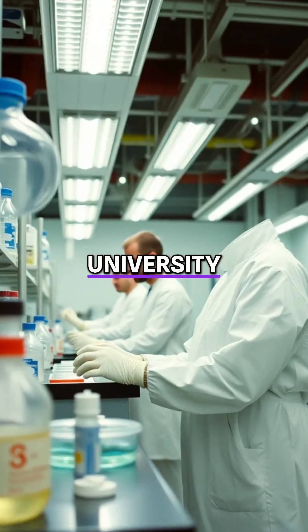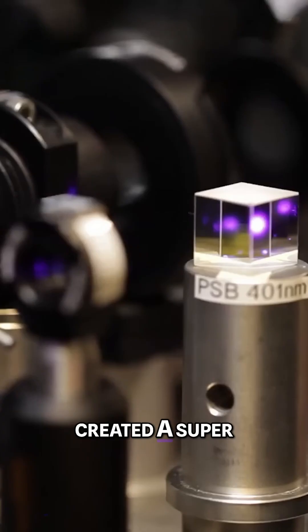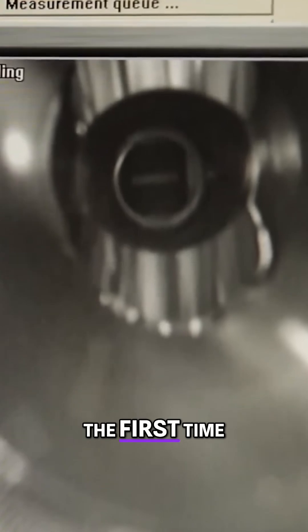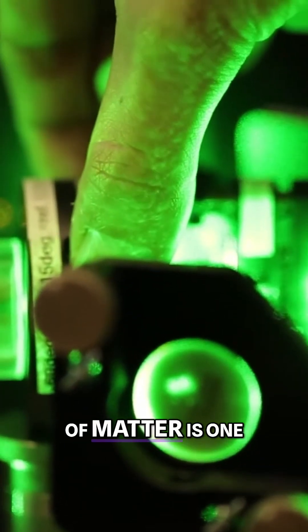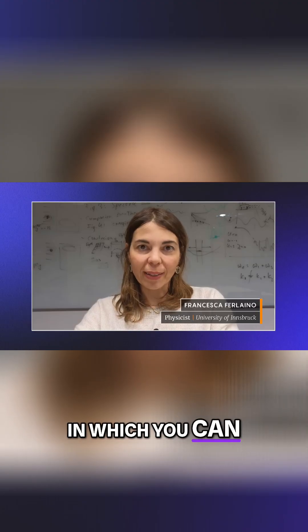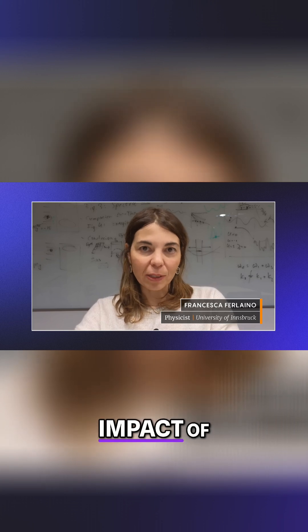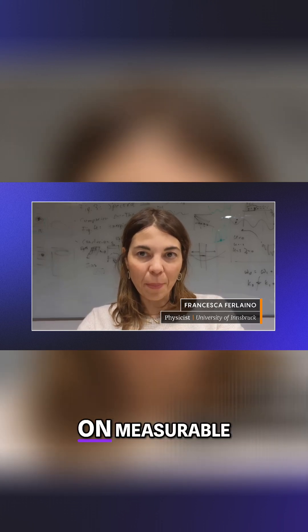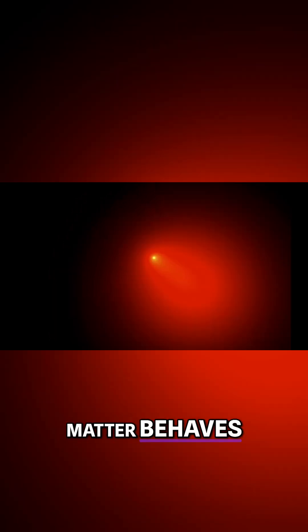This year, scientists at the University of Innsbruck in Austria created a super solid in the lab for the first time. The super solid state of matter is one of these unique situations in which you can really see directly the impact of quantum mechanics on measurable properties of the system. The results may help explain how matter behaves in some of the most extreme conditions in the universe.